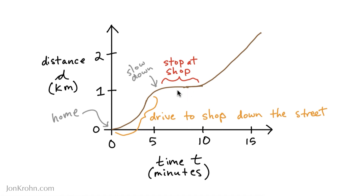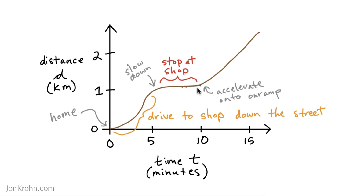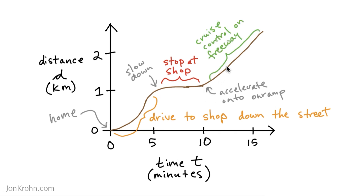You buy some snacks for the trip that you have coming up ahead. Then after being at the shop for about five minutes, you get back in the car and the vehicle starts moving again. The brown line is just the vehicle — when you're in the shop moving around, nothing changes on our chart. After you've grabbed your snacks, you get back in the car, you accelerate onto an on-ramp, and then for this part of the curve, you're in cruise control on the freeway going at a continuous, constant speed.